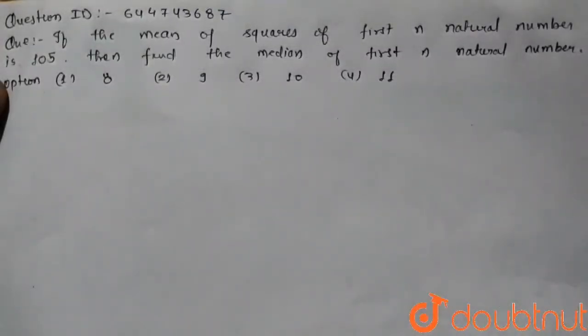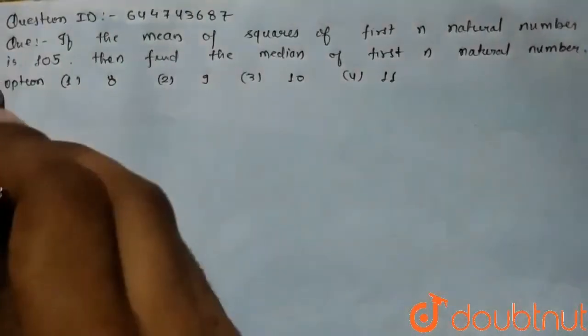If the mean of the squares of first n natural numbers is 105, then find the median of first n natural numbers. So we know that...